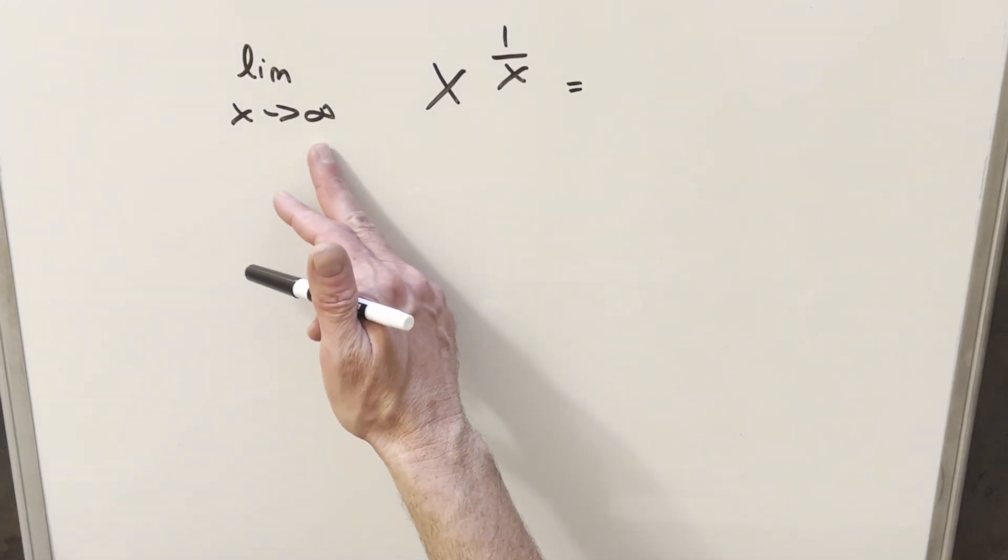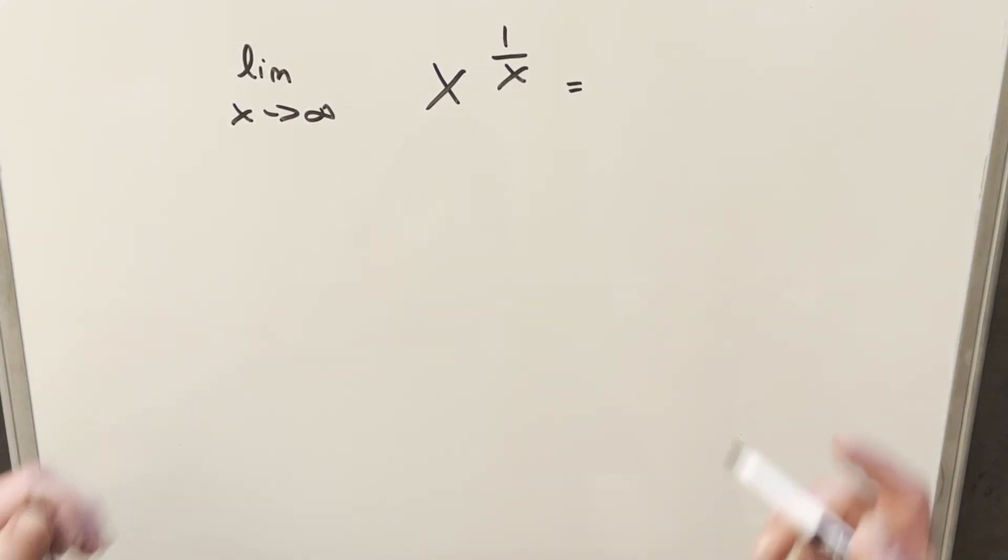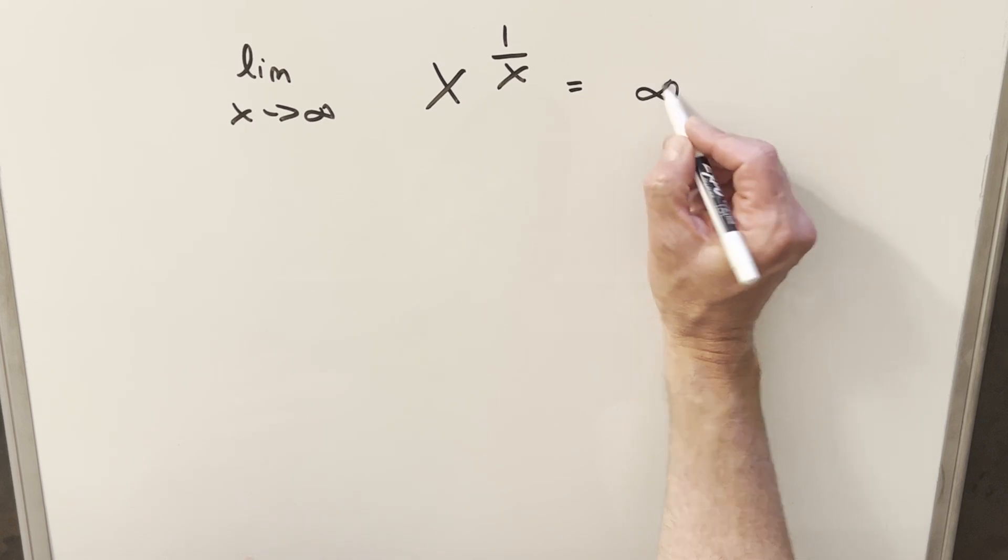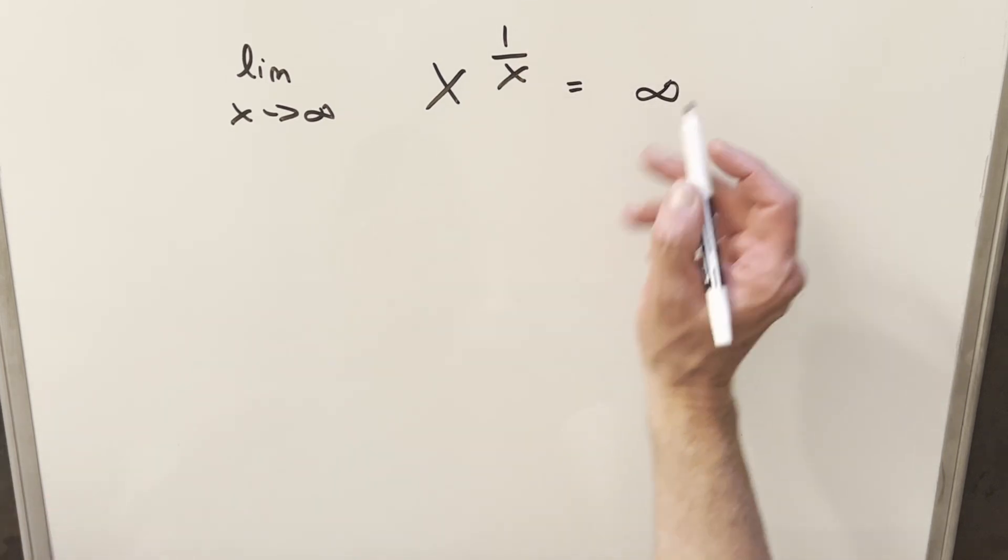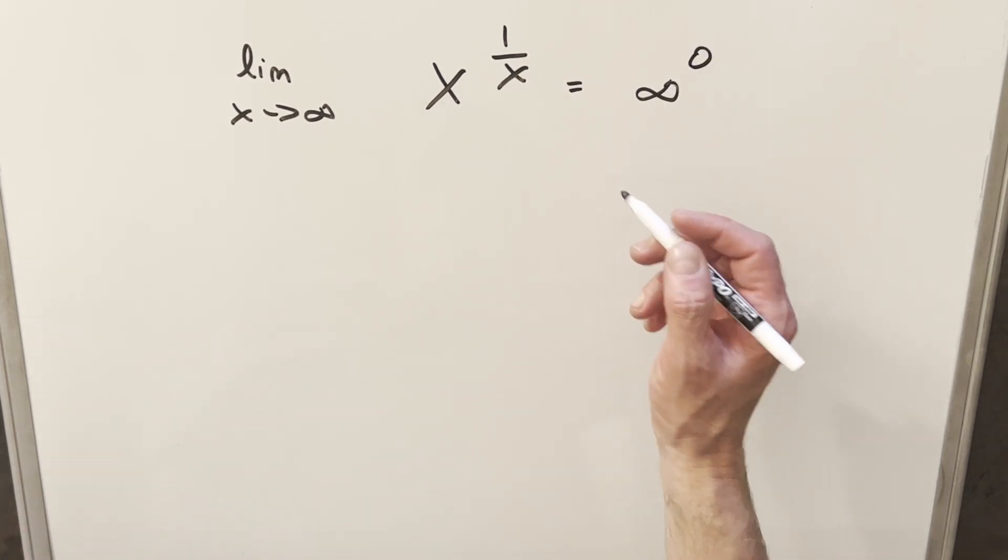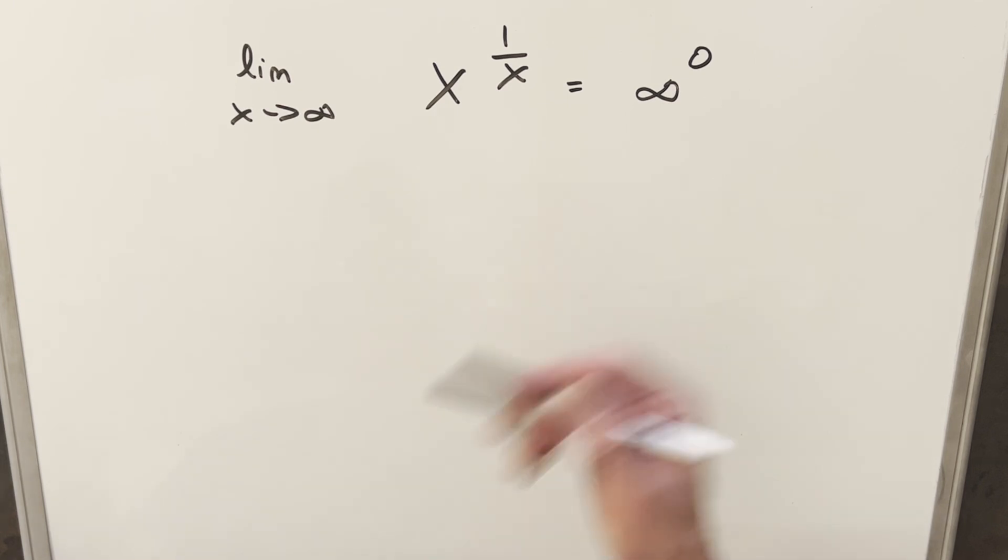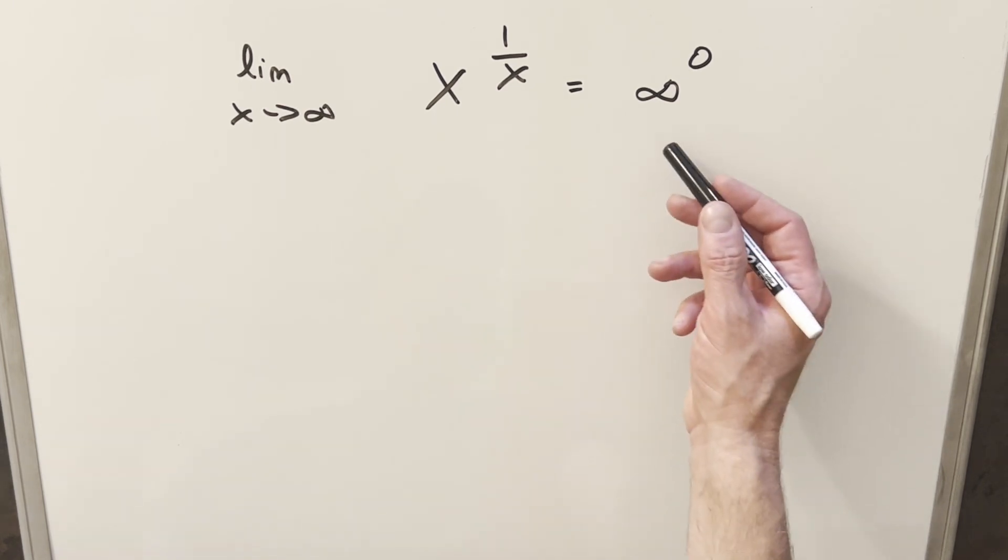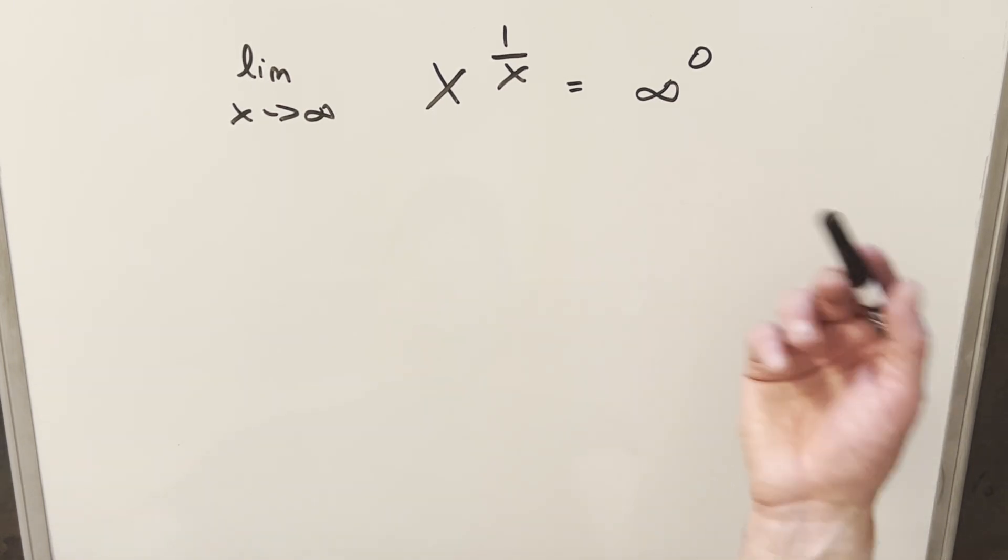To get started, let's try to evaluate it at infinity and see what happens. So if we have infinity at the base, 1 over infinity here, this is going to be infinity to the 0. But this is an indeterminate form, so we don't really know if this is going to infinity or 0 or 1 or what.